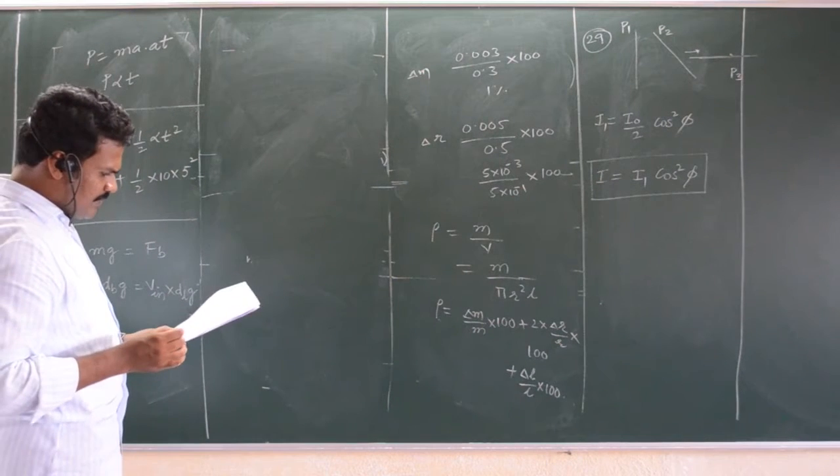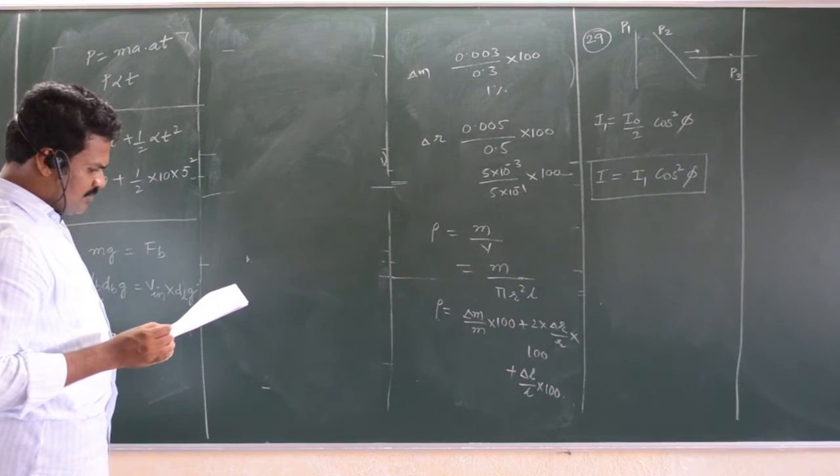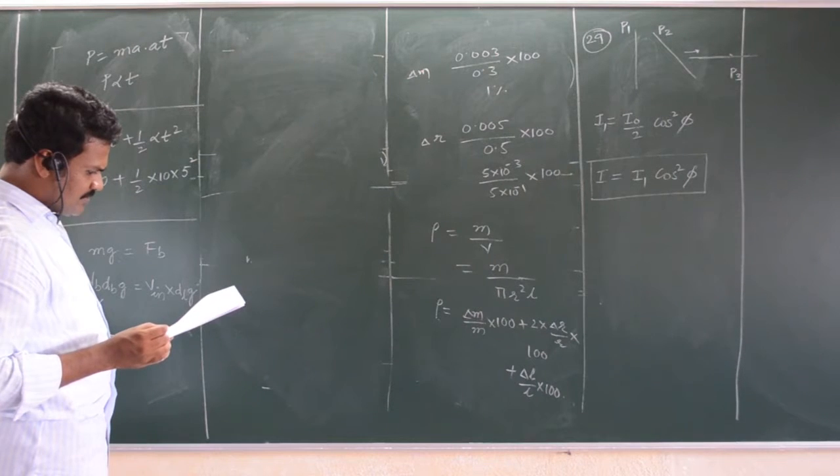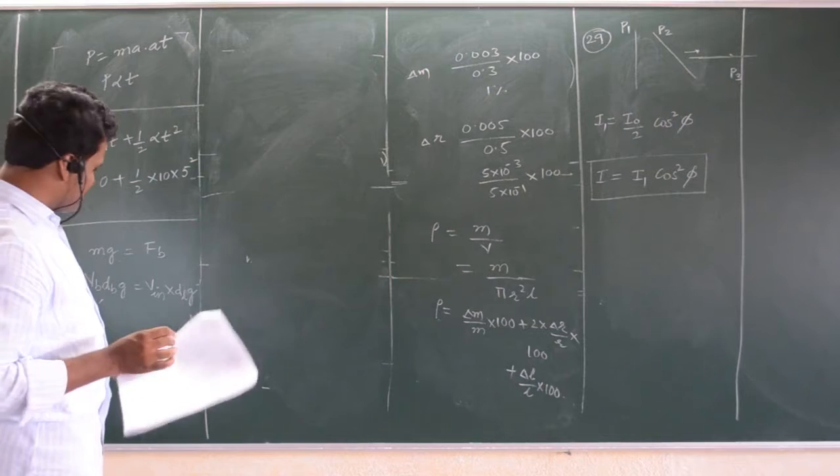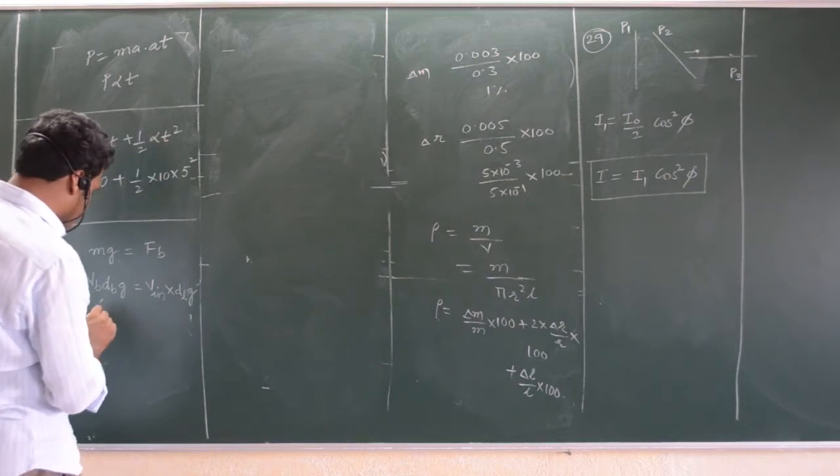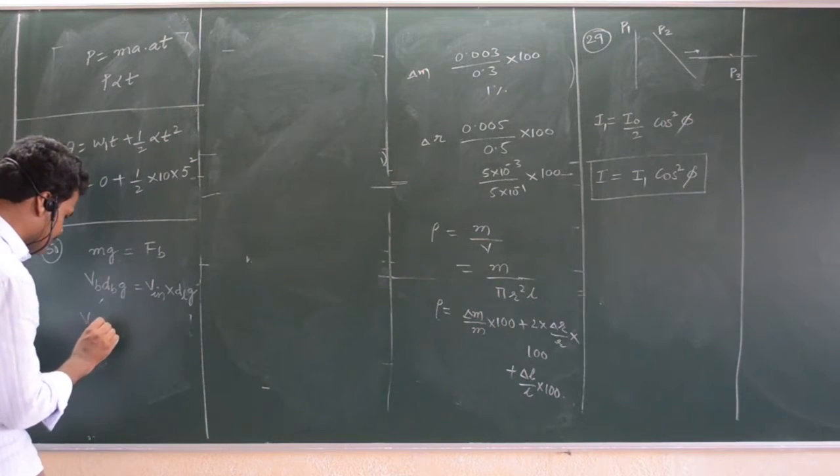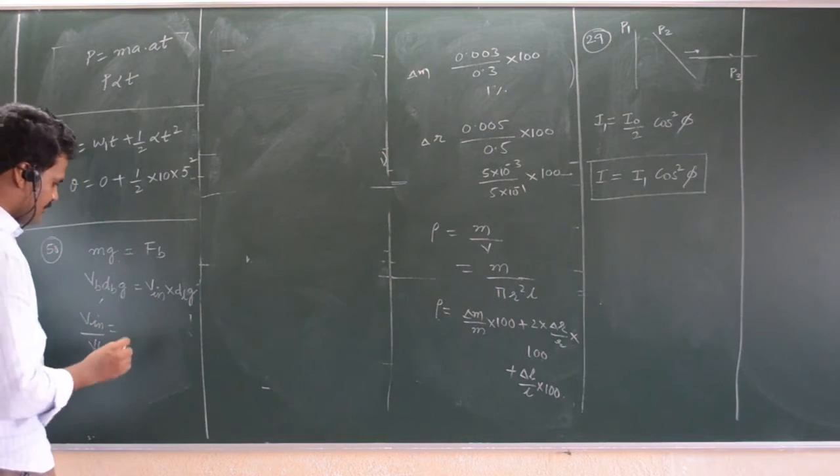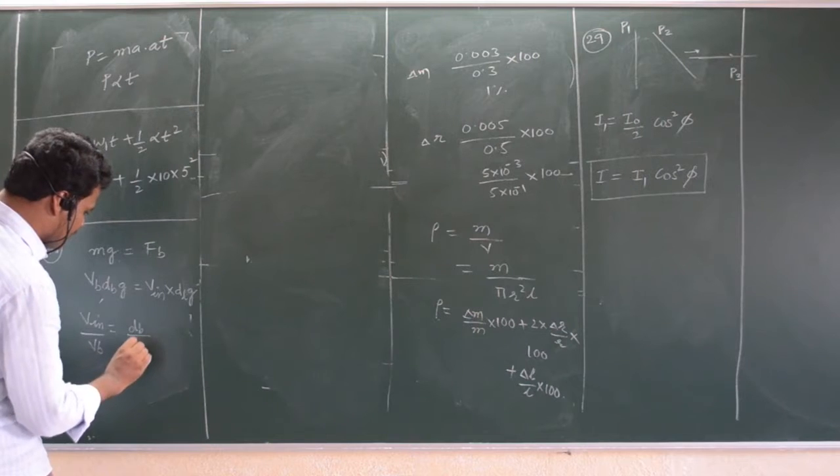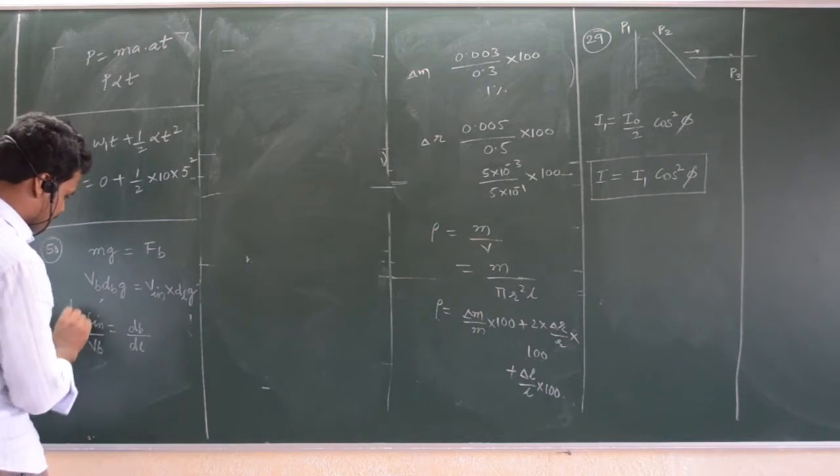So, your density of ice is given 0.9. What fraction of the volume of iceberg is submerged means it's asking volume inside by volume of the body. Volume inside by volume of the body is equal to density of the body by density of liquid. This is the answer.